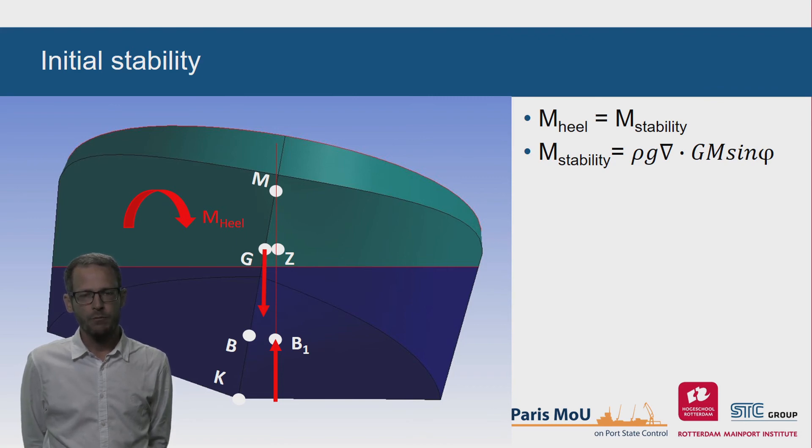For small angles, B1 lies right under M, and the forces through G and B1 are equal but opposite in direction. The righting moment is a force multiplied with the distance G to Z. And this distance GZ equals GM sinus φ. In other words, GZ is the measure for the righting arm, the measure for stability. And for small healing angles, GZ is equal to GM sinus φ.